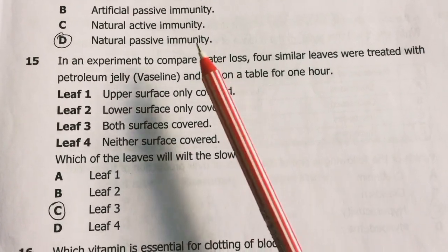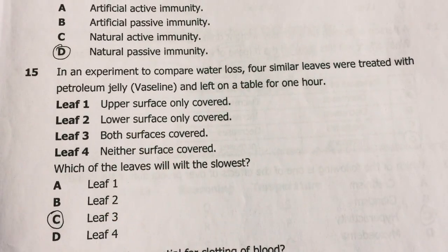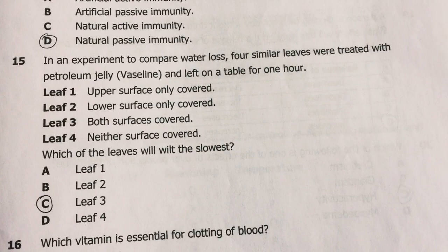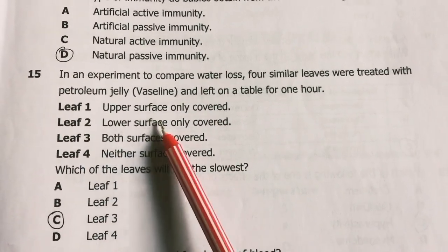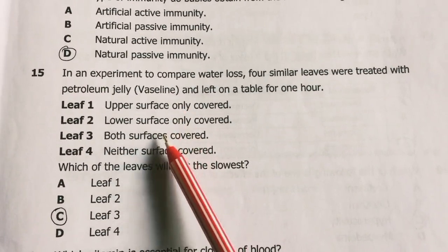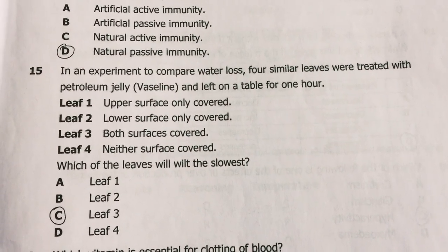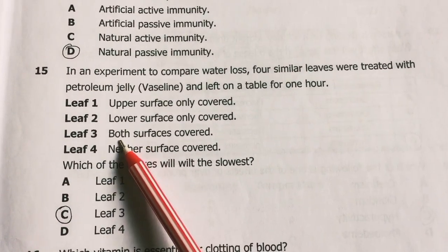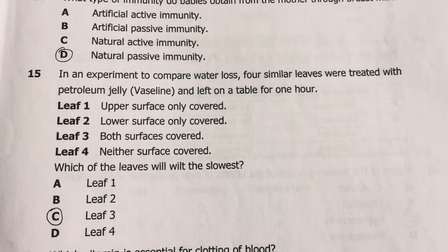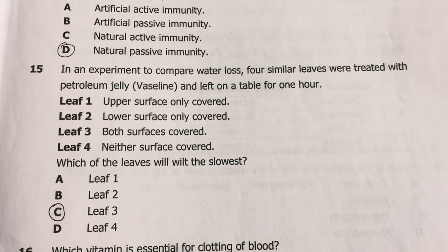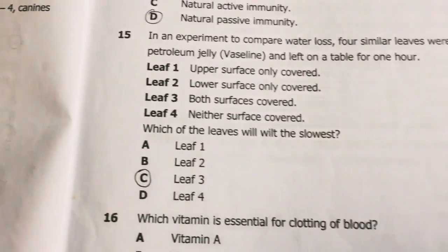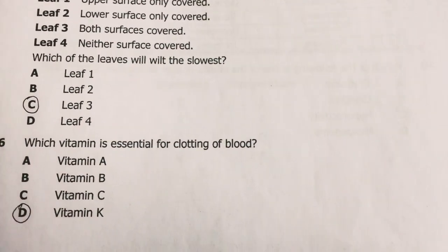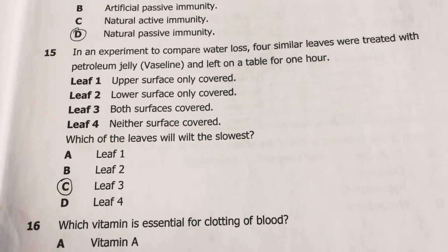The lower surface has more stomata, so it loses more water. Leaf four with neither surface covered will lose the most water, followed by leaf two, then leaf one. Leaf three with both surfaces covered will lose the least water and therefore wilt the slowest. Wilting is caused by excess water loss from plant cells, also referred to as plasmolysis.